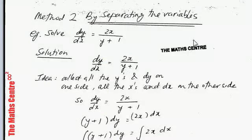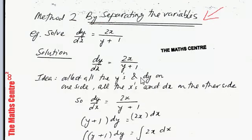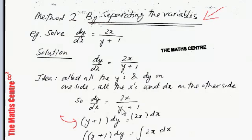Method number two is called separating the variables. Example: solve dy/dx = x/(y + 1). The idea is to take all the y's and dy to one side, and all the x's and dx to the other. Cross-multiplying gives (y + 1) dy = x dx — all y terms with dy on the left, all x terms with dx on the right.